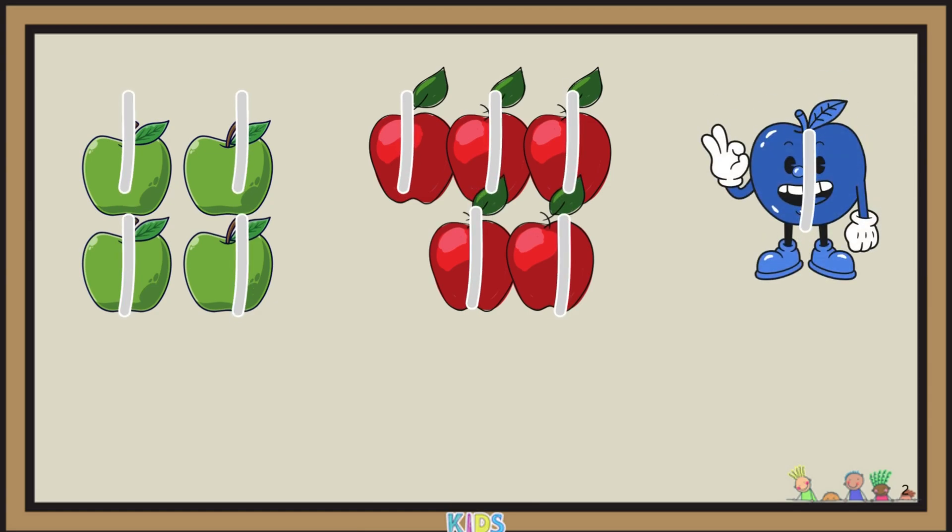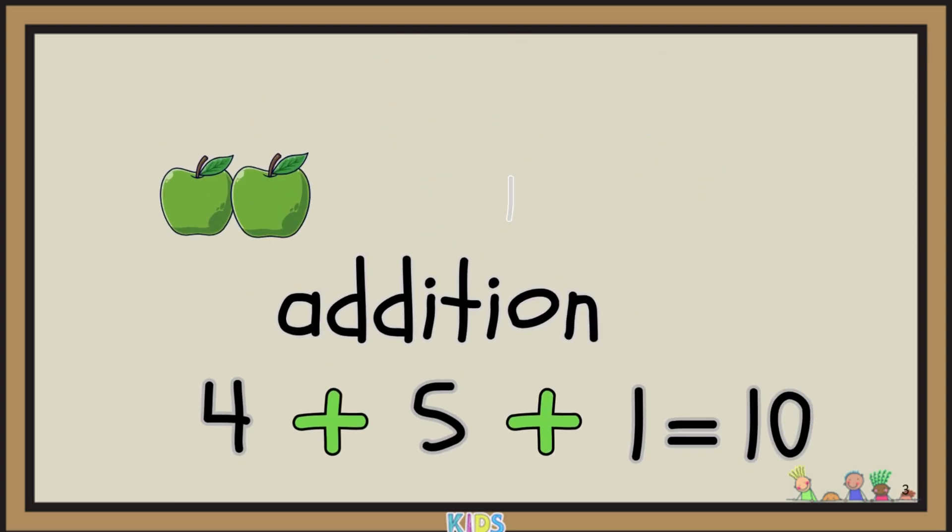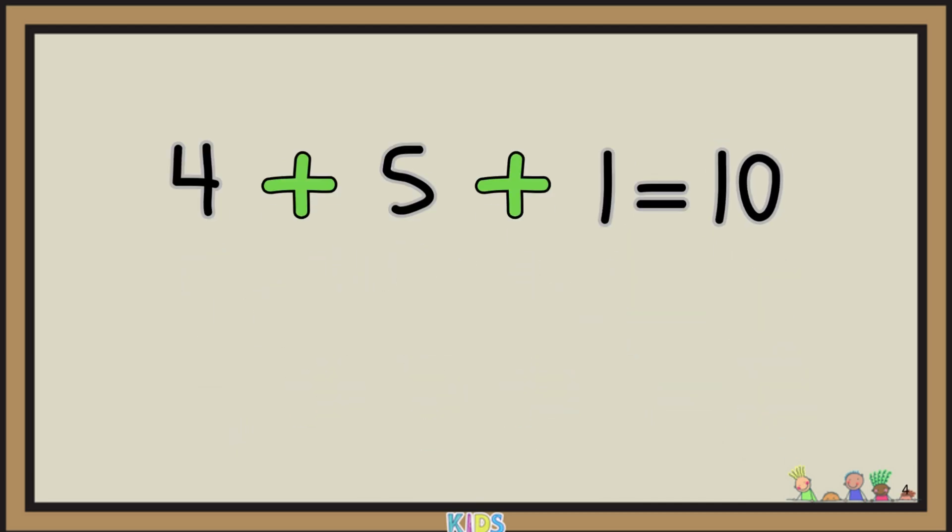You could count them one by one, from one to ten, but that takes time. With addition, you can simply say four plus five plus one equals ten. We call the answer in an addition problem the sum. So you can think of addition as a smart way to count more things quickly.